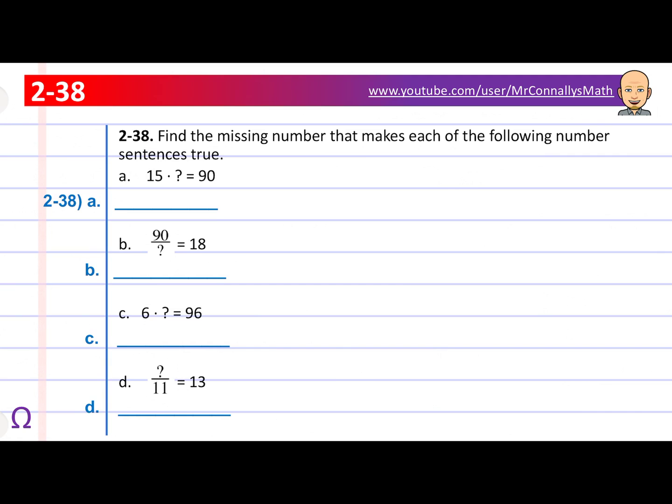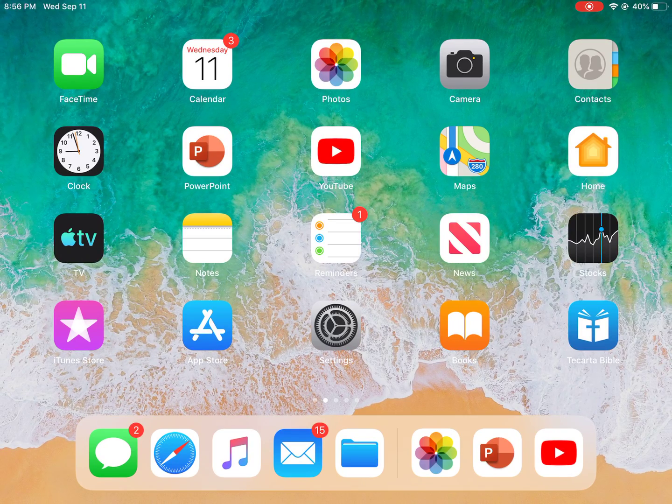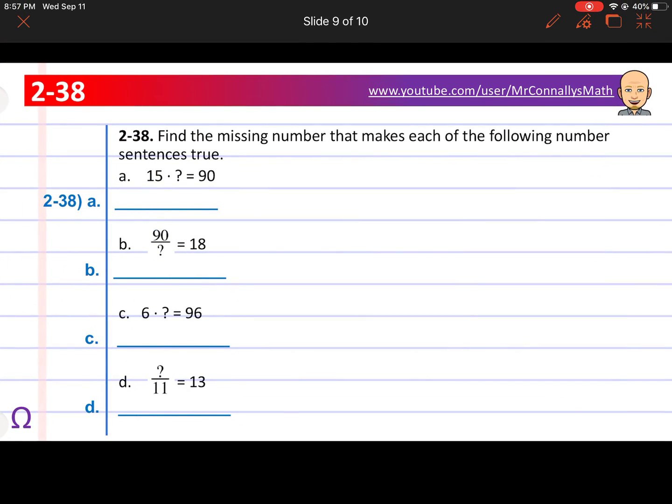Last one. Find the missing numbers that makes each of the following number sentences true. So number sentence is another way of saying an equation. So for A, we've got 15 times a number equals 90. I'll write it out like this: times a missing number equals 90. We can do this number sentence backwards, so we could say 90 divided by 15 gives us our mystery number, our answer. So remember, if we were to write it that way, we can just do it like this, use a calculator, or we can just write it. Remember, the first number goes inside the box, and the second number goes outside, and that, find the answer to that, and that'll give us our answer to go here, the mystery number.